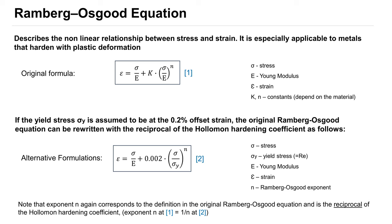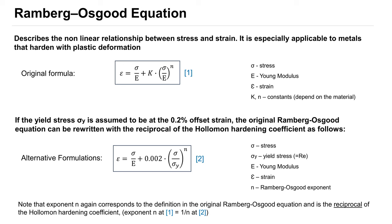If the yield stress is assumed to be at the 0.2% offset strain, the original Ramberg-Osgood equation can be rewritten with the reciprocal of the Hollomon-Hardening coefficient as follows in Formula 2.